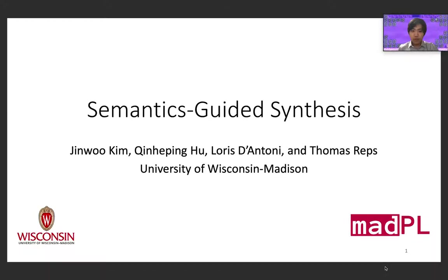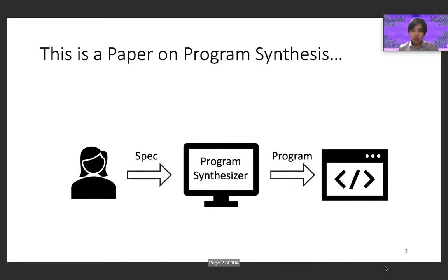Hi everyone, my name is Junmo Kim and I'm here to give you a talk on our paper, Semantics-Guided Synthesis. Semantics-Guided Synthesis is a paper about program synthesis which, broadly speaking, refers to the process of automatically generating a program given some specifications that are input by a user. A big part of this paper is about developing a framework for specifying program synthesis problems, hence the name Semantics-Guided Synthesis, and a way to solve problems defined in that framework, both of which I'm going to talk about today.